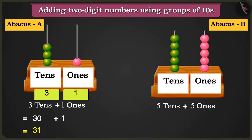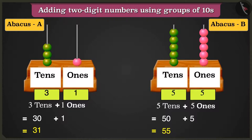So here 5 tens, that are 50, added to 5 ones, that are 5, will make the total number as 55.